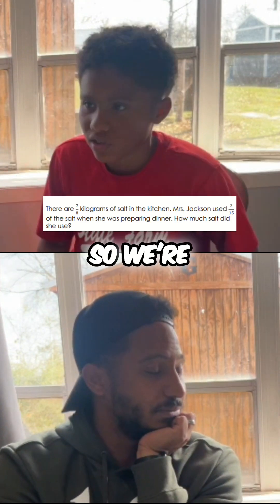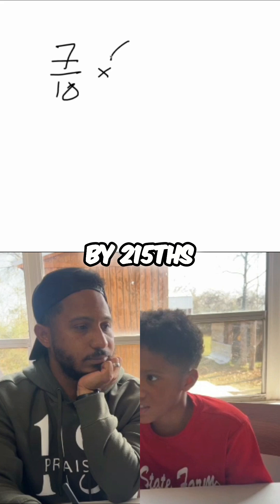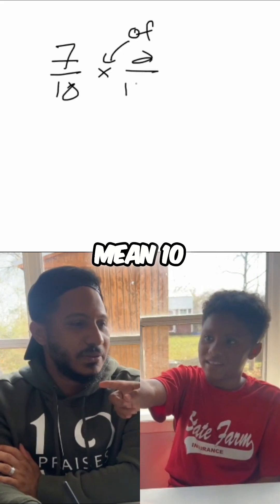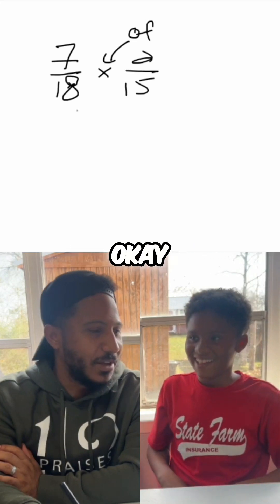We're multiplying seven-eighths by two-fifteenths. And that's that word 'of' right there. Yeah, not two. Well, I think you made ten. Okay, my handwriting's bad, you don't gotta talk about me. Okay, that's an eight, okay.